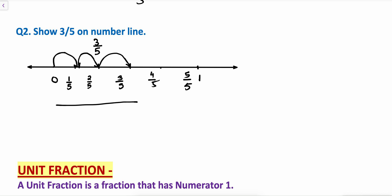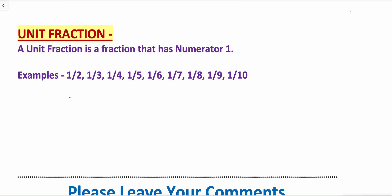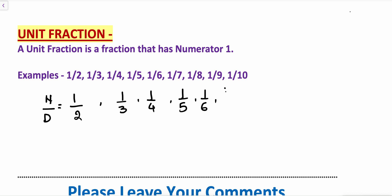Now let's see what are unit fractions. A unit fraction is a fraction that has numerator as 1. A fraction has a numerator and denominator. If 1 is written in the numerator, then it is called a unit fraction. So 1 by 2 is a unit fraction, 1 by 3, 1 by 4, 1 by 5, 1 by 6, 1 by 7, 1 by 8, 1 by 9, 1 by 10 and so on. All these fractions have 1 as numerator and other numbers as denominator. Whenever the numerator is 1, it is called a unit fraction.